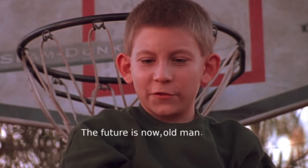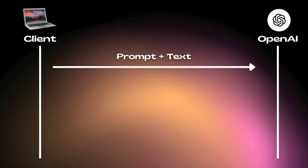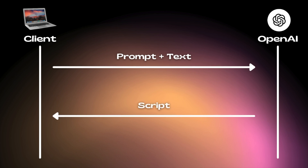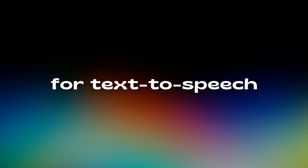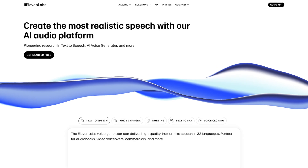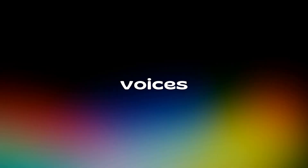I usually include my prompt in a prompt that I use to prompt ChatGPT to assist me in improving my prompt. Once that's done, we pass in the prompt along with our text to an API call that we send to OpenAI and we get back a script. My tool of choice for text to speech is 11labs, since it has the best sounding voices.